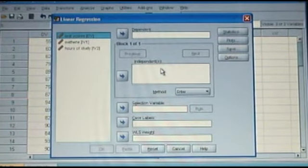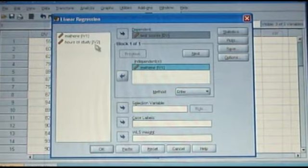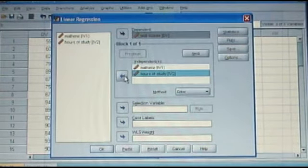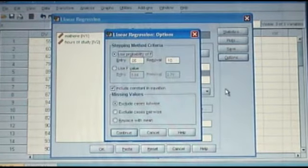Clicking on this will give you a linear regression box. All you need to do is click over your dependent variables, and then your independent variables into the independent box. If you go to the right hand side of the box and click on options, you'll see a little box that comes up. You'll want to make sure that your alpha level is set at 0.05.